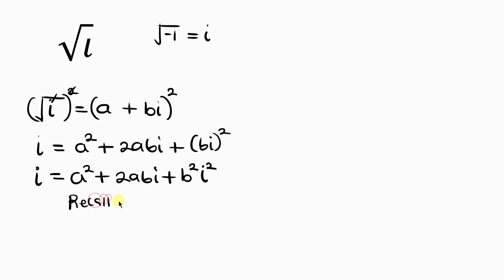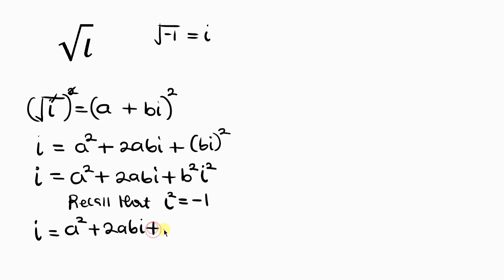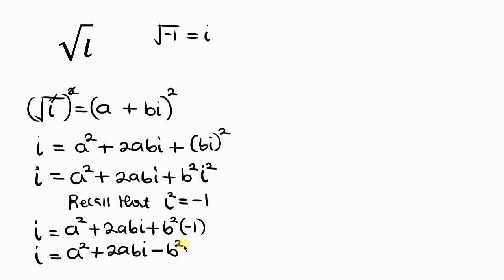Recall that i² is always equal to negative one. Substituting, this becomes i = a² + 2abi + b² times negative one, which gives i = a² + 2abi − b².